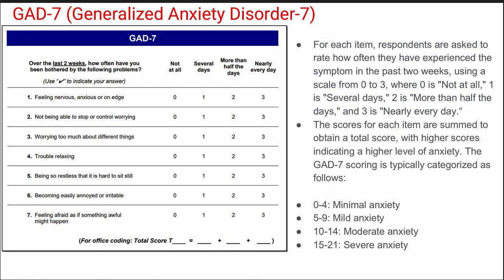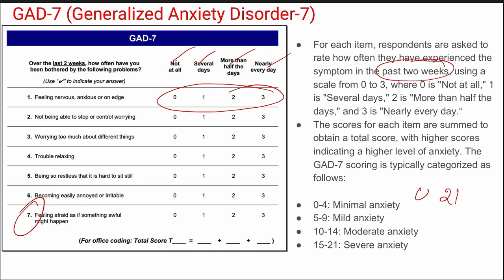Next is GAD-7, the Generalized Anxiety Disorder 7 questionnaire. Similar to PHQ-9, the scoring remains 0 to 3 covering not at all, several days, more than half the days, and nearly every day over the past two weeks. With 7 items, the maximum score is 21 and the minimum is 0. Higher scores indicate higher anxiety levels, categorized as minimal, mild, moderate, and severe anxiety.